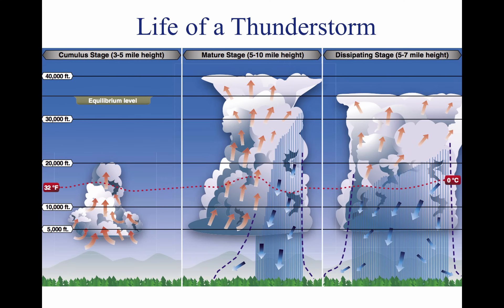A thunderstorm makes its way through three distinct stages before dissipating as shown above. It begins with the cumulus stage, in which lifting action of the air begins. If sufficient moisture and instability are present, the clouds continue to increase in vertical height.